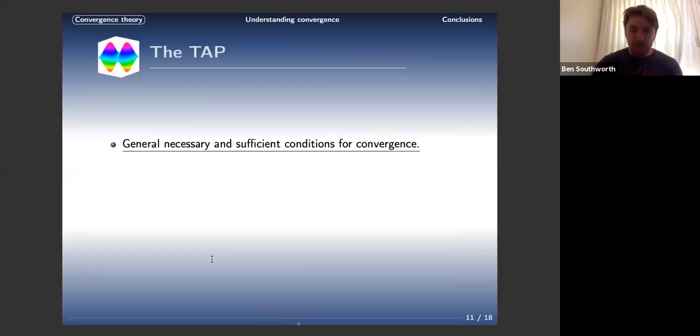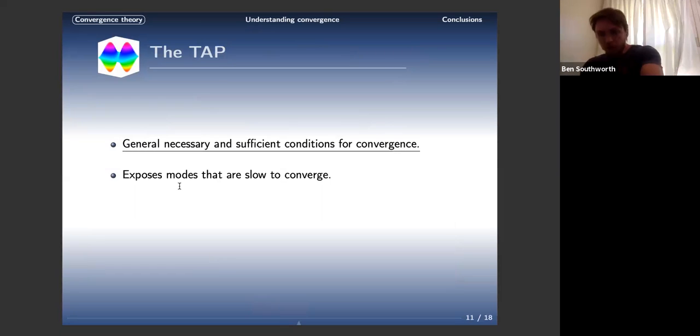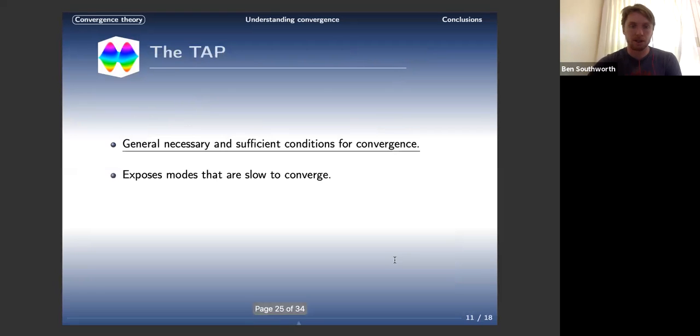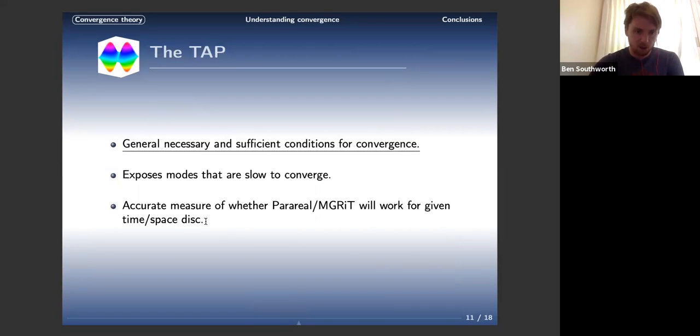The TAP provides general necessary sufficient conditions for convergence. It exposes modes that are slow to converge. I'm not going to get into this, but you can actually compute this using what's called a generalized singular value decomposition. In addition, you can actually plot the vector and see geometrically what mode is causing your slow convergence or divergence. Last, and what I'm going to talk about, is that it provides an accurate measure of whether parareal and MGRIT will work for a given time and spatial discretization. It helps us understand what we need in our choice of discretization for an effective method.